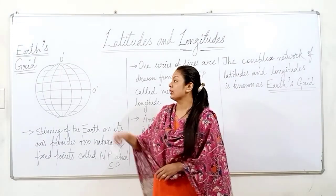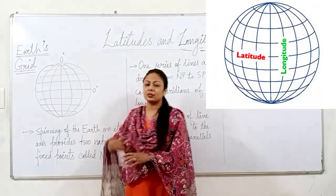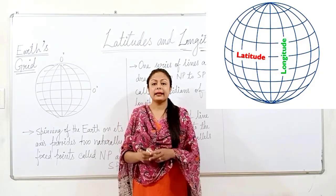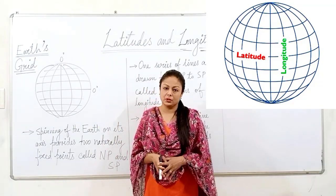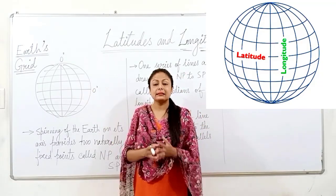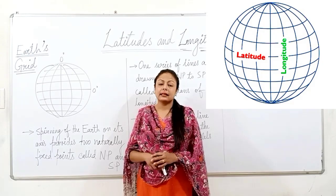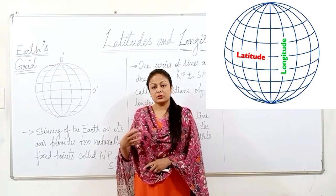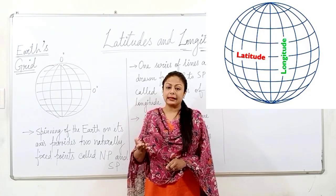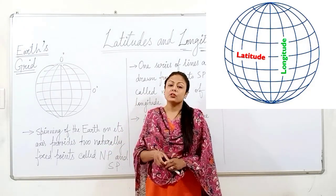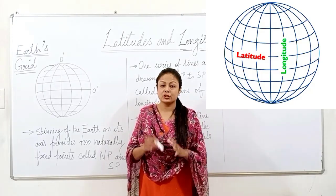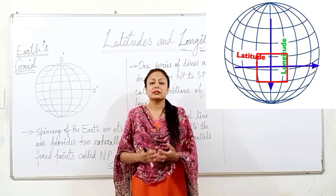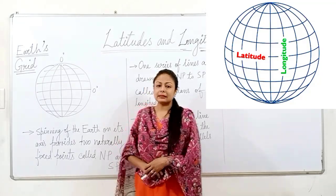Here we will talk about earth's grid. Students, look at this diagram. You can see that the vertical longitudes and the horizontal latitudes form a complex network, and this is known as the grid system or earth's grid. This helps us to locate any place on the earth very precisely. We also divide a longitude or a latitude into minutes and further into seconds so that we can get the exact location of a place. Where a longitude and a latitude intersect, that point gives us the location of a place.